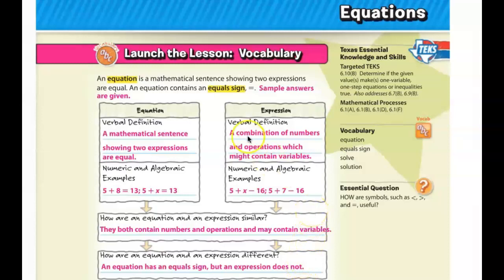So I want you to answer this question for me. What is true about an equation? What is always true about an equation? It is always true that an equation will have an equal sign. Next question. What is always true about an expression? Please answer that for me. Expressions do not have equal signs.